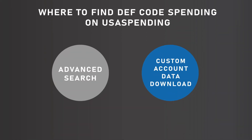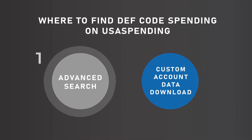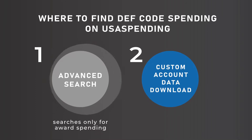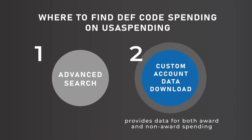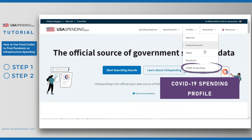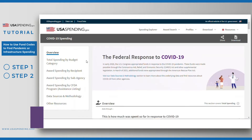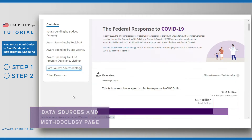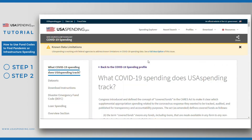This video will show you where to find DEF code spending in two different places on USA Spending: first on Advanced Search, which searches only for award spending, and second in the Custom Account Data Download, which provides data for both award and non-award spending. We also have a COVID-19 Spending Profile, but since it focuses only on pandemic spending, we'll save it for a future discussion. However, this profile does link to a useful Data Sources and Methodology page that explains how DEF codes track pandemic spending, so be sure to check that out for more information if you're interested.